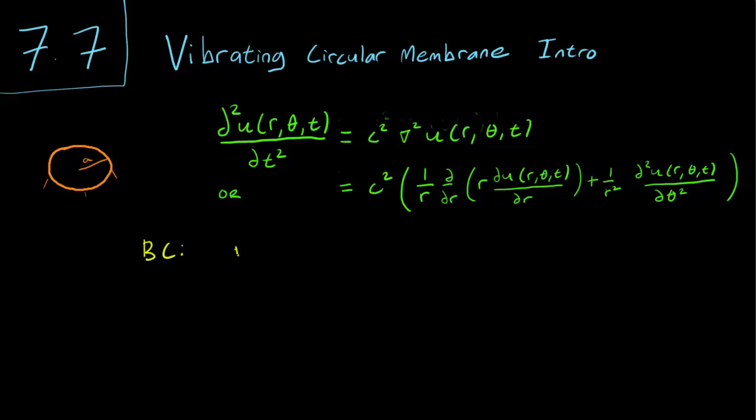We also want to impose some boundary conditions. We have that u(a,θ,t) is always 0. In other words, the height of the trampoline around the boundary is always set to 0. It never changes as time or angle changes.